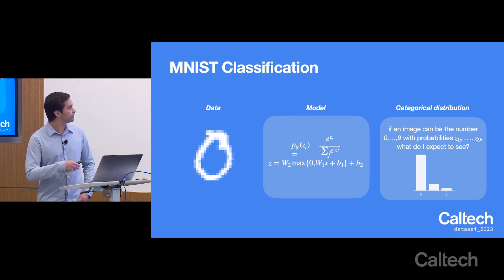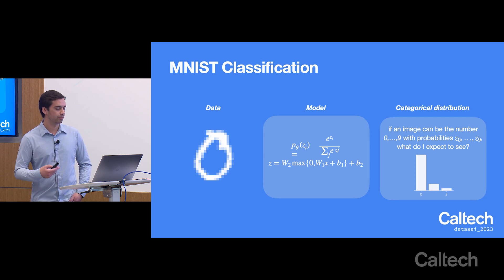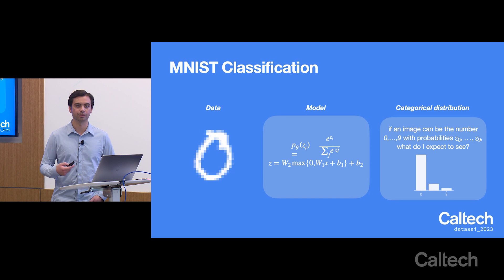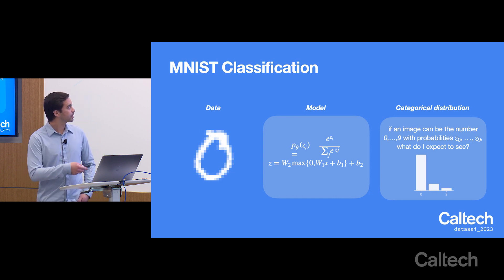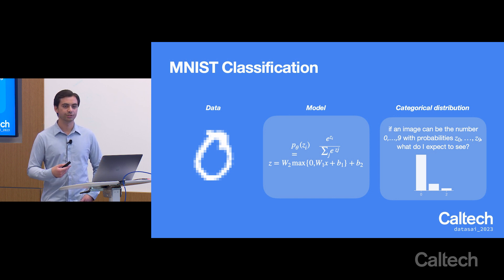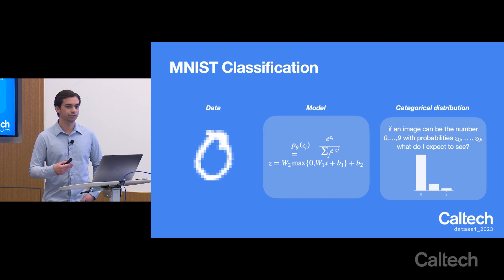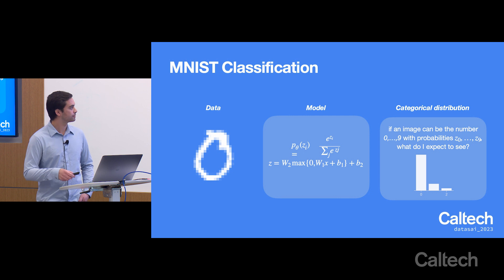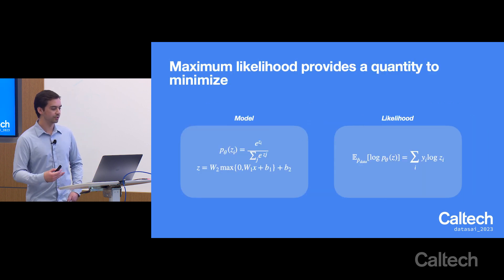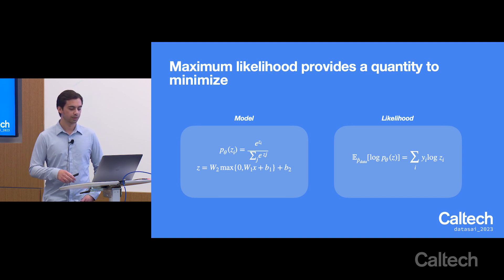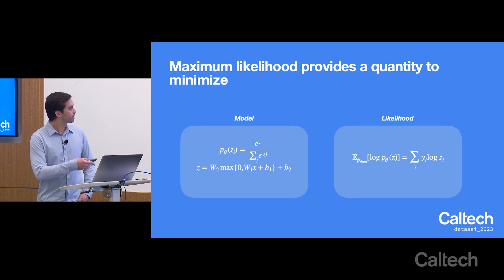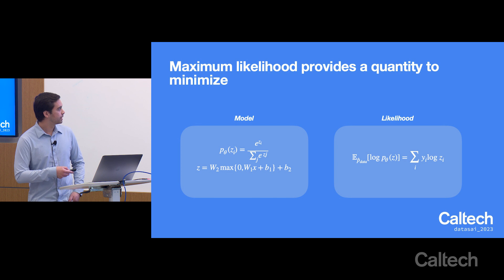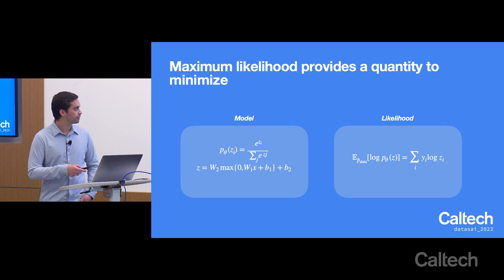One example of employing a neural network — which we will use in the Jupyter Colab notebook — is MNIST classification. In MNIST classification, we have data of handwritten digits from 0 to 9, and we can model this using the softmax distribution, where a particular number has a probability of having an identity between 0 and 9. Maximum likelihood provides the quantity for us to minimize in this case.